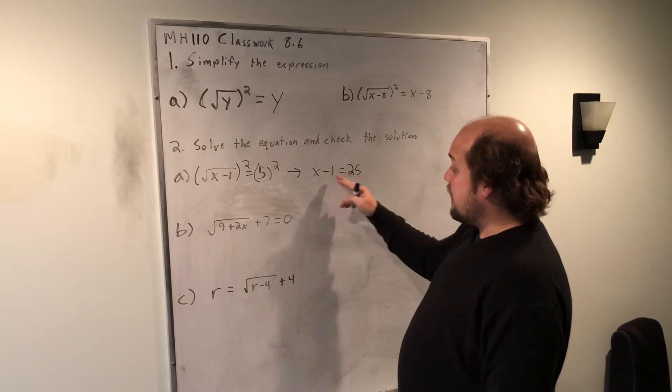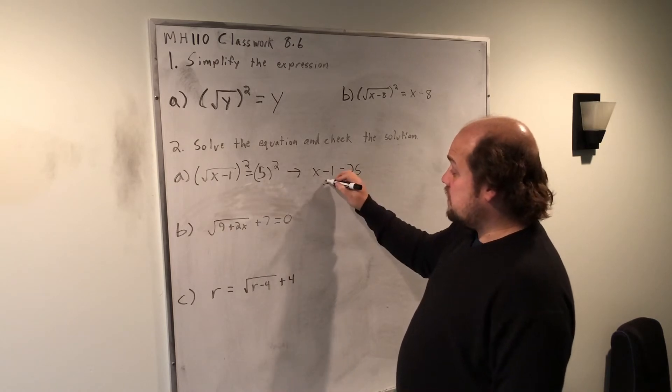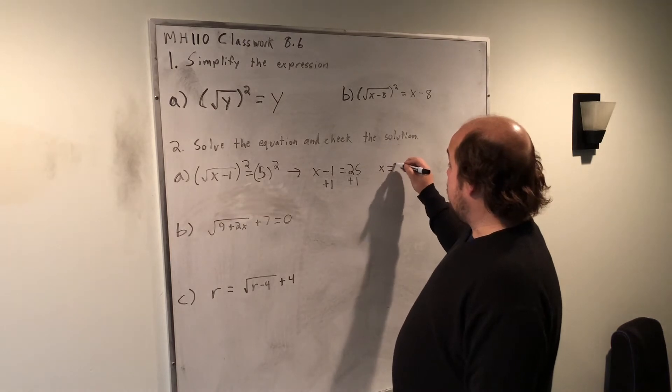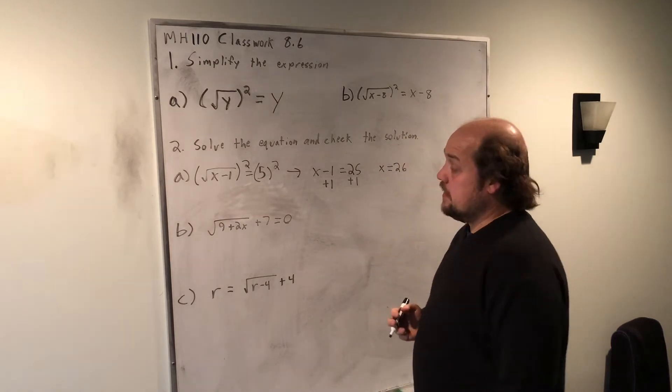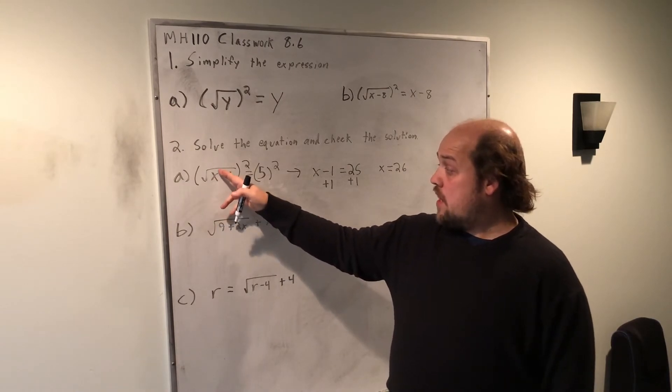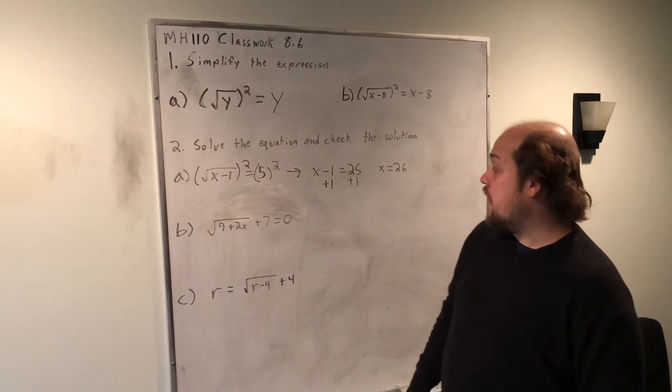I now know x minus 1 equals 25. To solve for x, I just add 1 to each side, and I get a final answer of x equals 26. If I wanted to plug that back in, I'd see that 26 minus 1 is 25, and the root of 25 does equal 5.